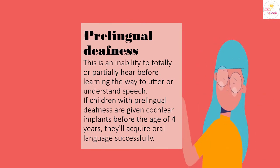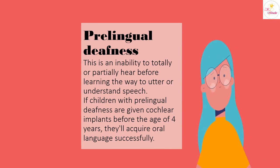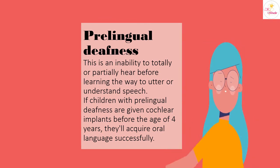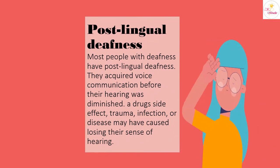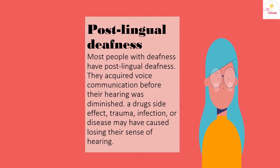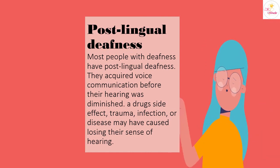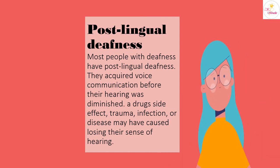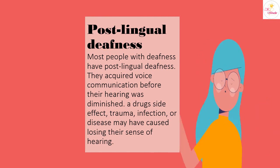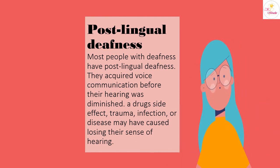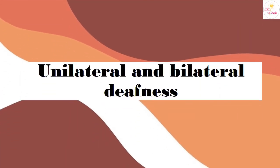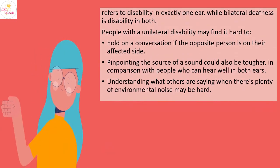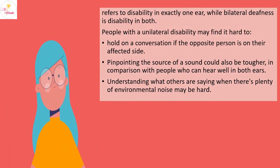Regarding deafness and speech: prelingual deafness is an inability to hear, fully or partially, before learning to speak or understand speech. If children with prelingual deafness are given cochlear implants before the age of four years, they can acquire oral language successfully. Most people with deafness have post-lingual deafness — they acquired speech before their hearing was diminished, which may have been caused by a drug side effect, trauma, infection, or disease.